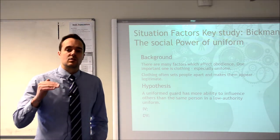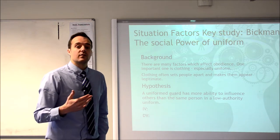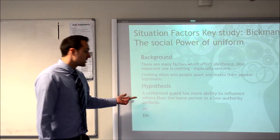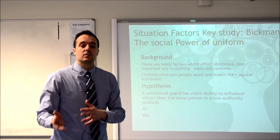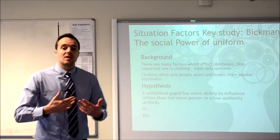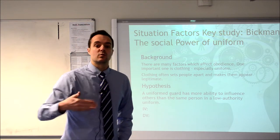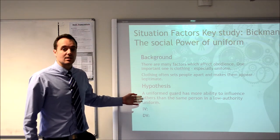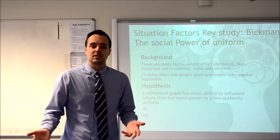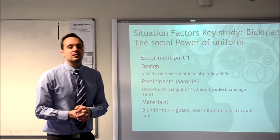You should always be able to work out the IV and DV - independent and dependent variables - from the hypothesis, and equally if you are given variables you should be able to turn them into a hypothesis. The alternative hypothesis here is that the uniform will have an influence on a person's obedience. So the independent variable - the thing we are going to change - is the uniform, and the dependent variable - the thing that's dependent on that - is the level of obedience. As a null hypothesis we would say the uniform will have no effect on the level of obedience.